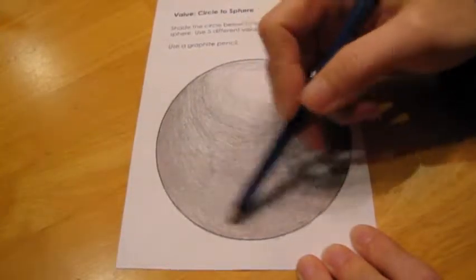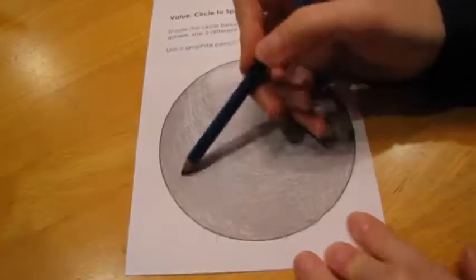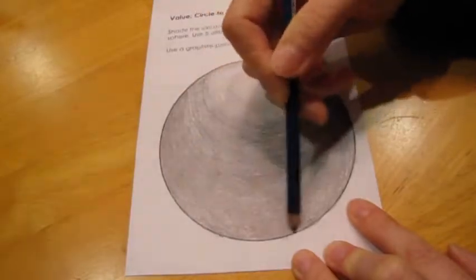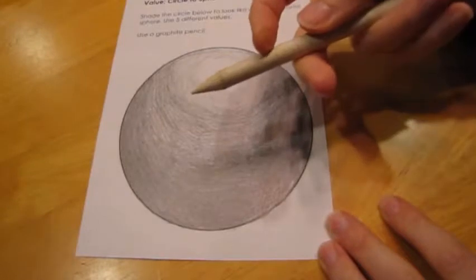Once you feel like you can count five different values within your sphere, you would then be ready to work on blending. Now blending could be done with your finger, but we are going to be using what is called a blending stump.